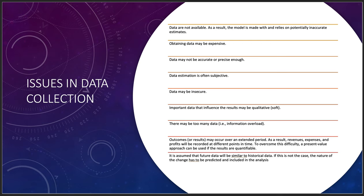Sometimes there may be too many data points to come up with a good answer — you need to pare back your data to where you need to go. Outcomes may also occur over an extended period, so revenues, expenses, and profits are recorded at different points in time. A present value approach can help. For example, you could have a daily receipt dashboard with weekly, monthly, and quarterly rollups for reporting.